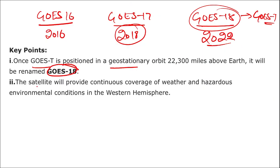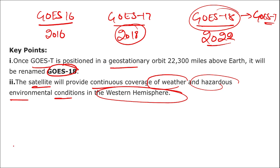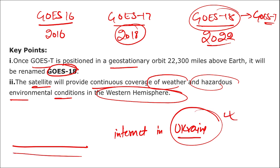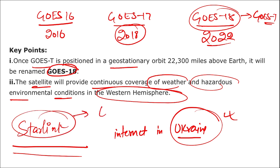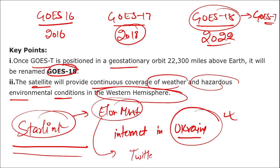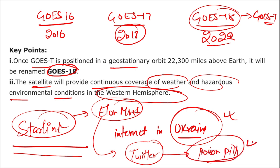GOES-18 will provide continuous coverage of weather and hazardous environmental conditions in the western hemisphere. Apart from this, Starlink — a company of Elon Musk — recently provided internet to the people of Ukraine. Elon Musk is also planning to buy Twitter, due to which Twitter adopted a poison pill strategy to dissolve the share of upcoming new shareholders.